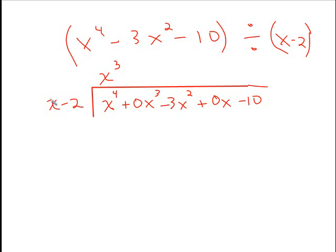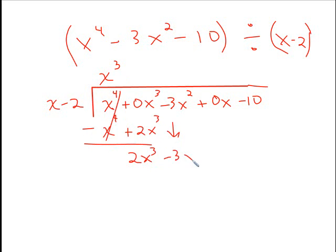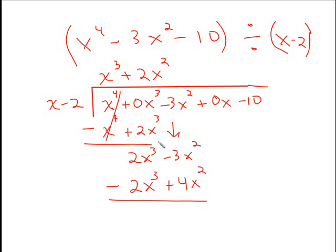x cubed times x will give us x to the 4th. Multiply here — that's negative 2x cubed. Change the signs; this should always cancel. We get 2x cubed. Bring down minus 3x squared. Repeat the process: 2x squared times x gives 2x cubed; multiply here — that's negative 4x squared. Change the signs; this cancels. We end up with x squared.